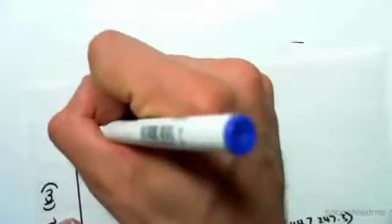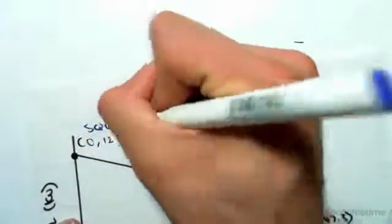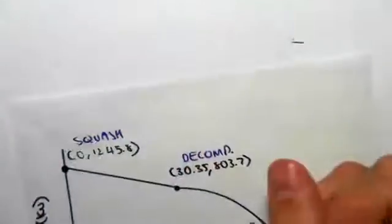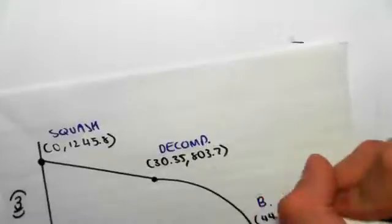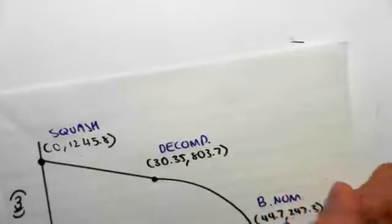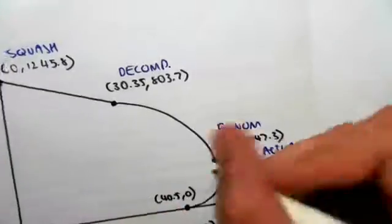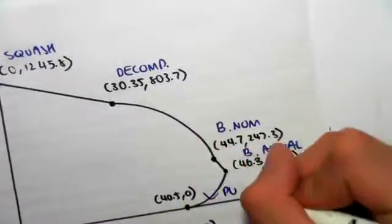So I'm going to label this: this is the squash load, this is the decompression point, this is the balanced nominal, this is the balanced actual, and this is the pure bending.